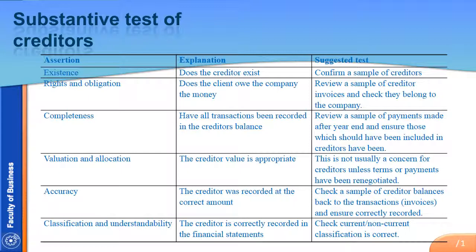Accuracy — that the creditor was recorded at the correct amount. You take the creditor balances and trace them back to the invoices to ensure that they're correctly recorded.